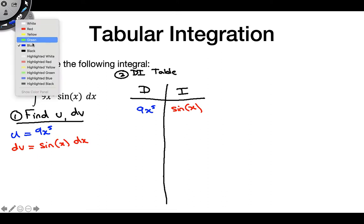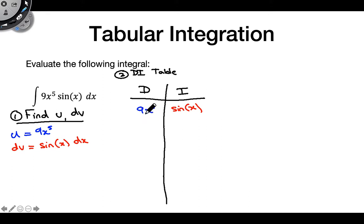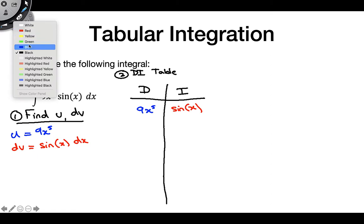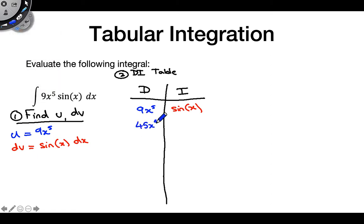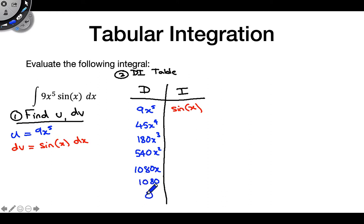Now we're going to differentiate the D column repeatedly and integrate the I column repeatedly until something becomes zero — which will probably happen in the D column. Taking repeated derivatives of 9x to the fifth: the first derivative is 45x to the fourth, then 180x cubed, then 540x squared, then 1080x, then 1080, and then the derivative of 1080 is zero. So we have a zero in this column.